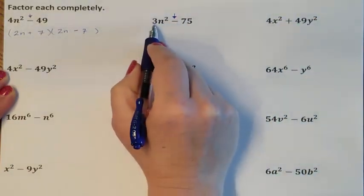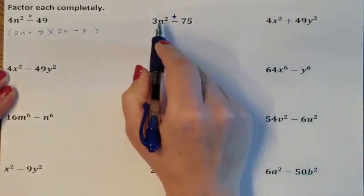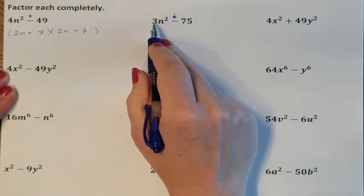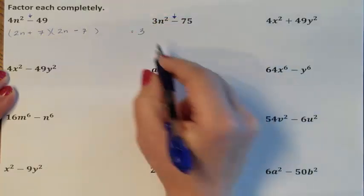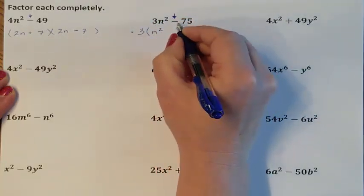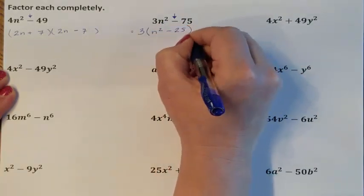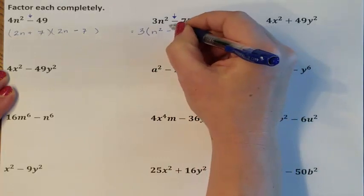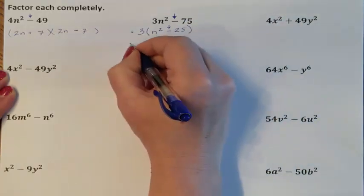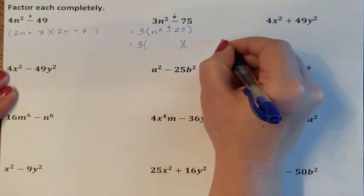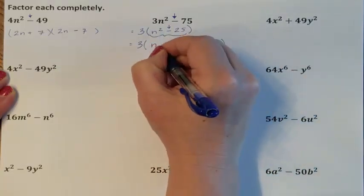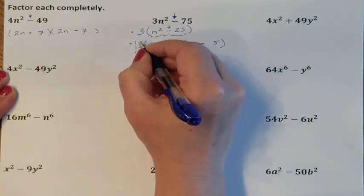It is a subtraction problem, but I cannot take the square root of 3. So first, am I missing a GCF? Can I divide 3 and 75 by the same number? I can — I can divide both by 3. So if I factor out a GCF of 3: 3n squared divided by 3 is just n squared. Negative 75 divided by 3 is negative 25. Can I square root n squared? Yes. Can I square root 25? Yes. So here's my GCF of 3, and here are my parentheses for my difference of two squares. The square root of n squared is n, the square root of 25 is 5. And I just factored.